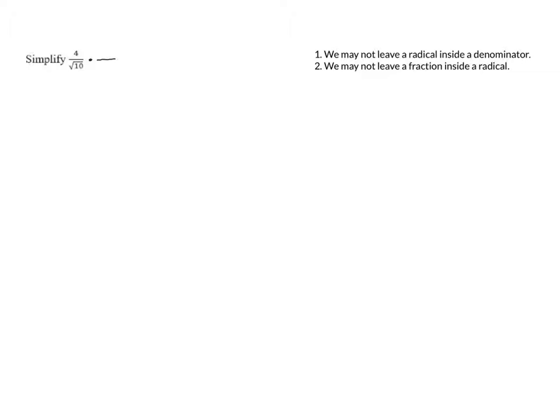What we want to do is multiply the top and bottom by some quantity so that we end up with a perfect square inside the radical in the bottom, and then we can evaluate that square root. So we're always going to multiply the top and bottom by the square root of something, with the hope of ending up with a perfect square in the bottom. Here, if we multiply the top and bottom by the square root of 10, that's going to achieve the goal.